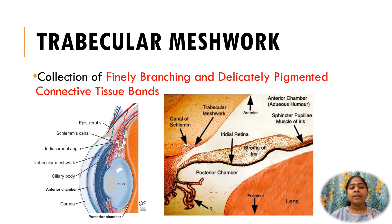Their lining cells are continuous with the corneal endothelium. Posteriorly, the trabecular meshwork extends to the scleral connective tissue called the scleral spur.